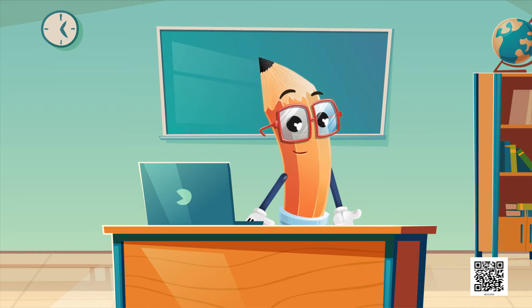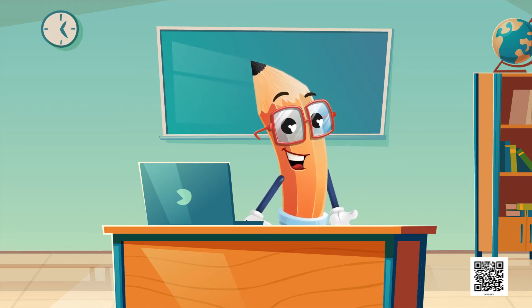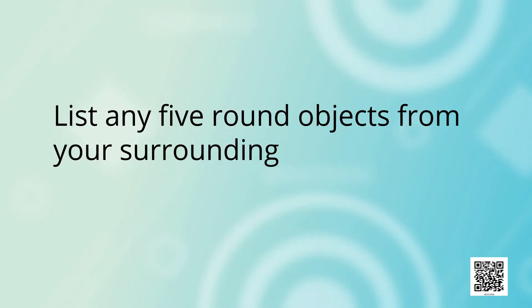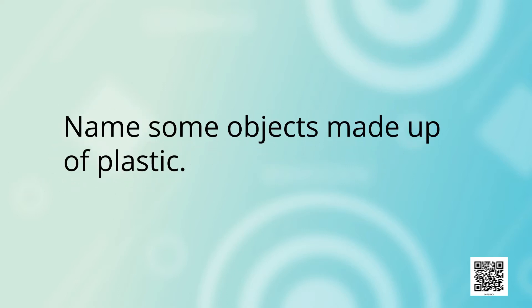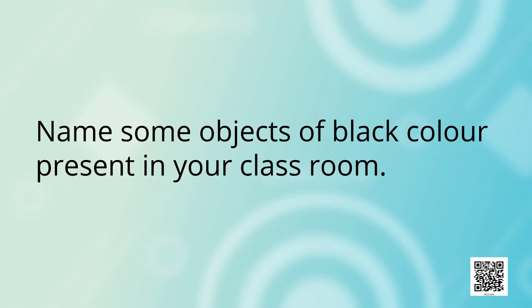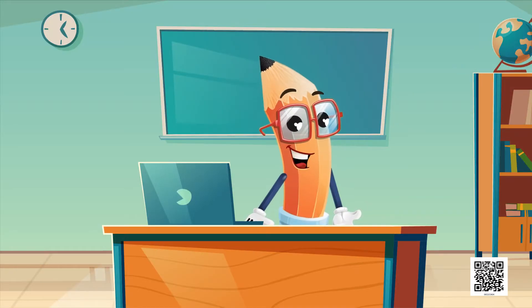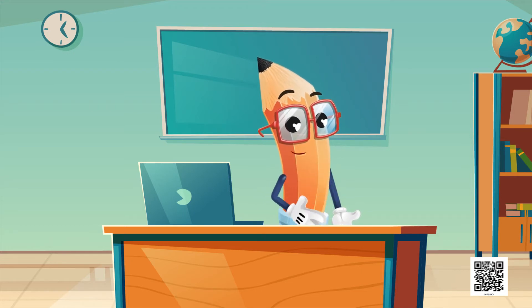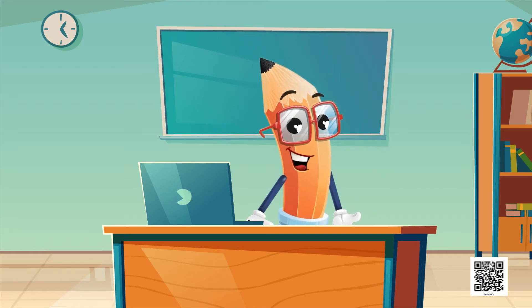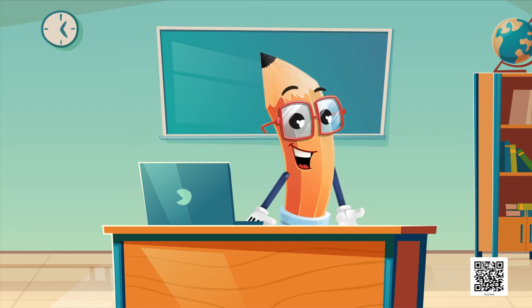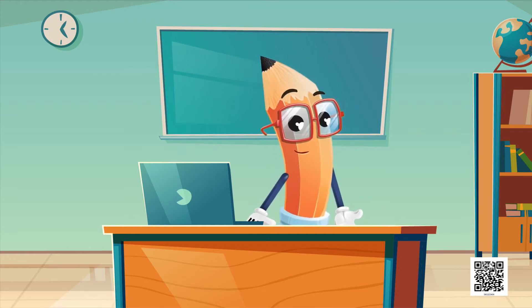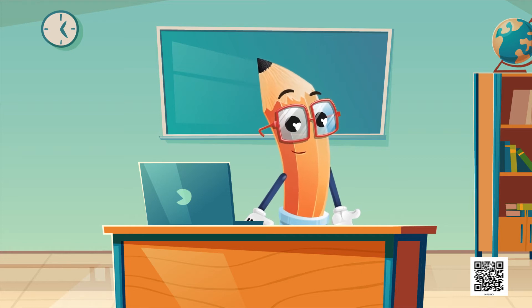What kind of objects do you see in your surroundings? List any five round objects from your surroundings. Name some objects made up of plastic. Name some objects of black color present in your classroom. After doing all these things, we are able to understand that all the objects can be divided into different groups according to their shape, size, color and properties.